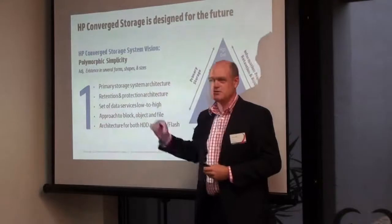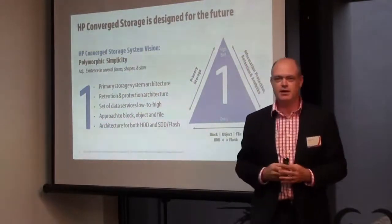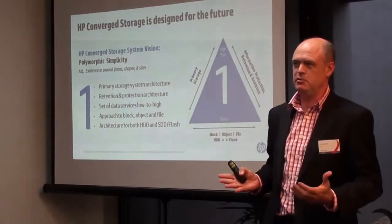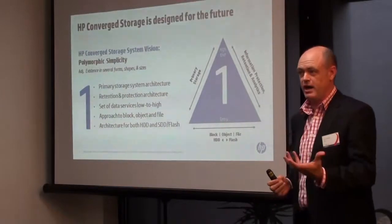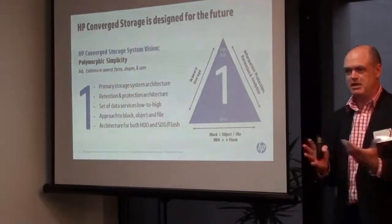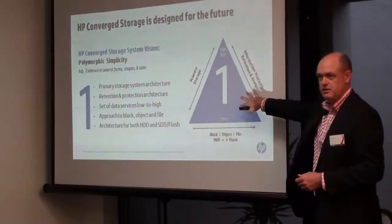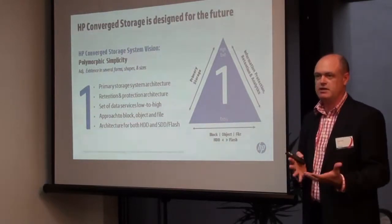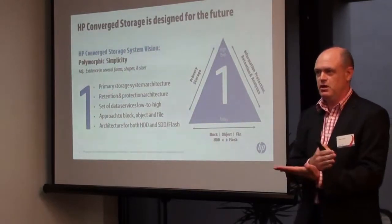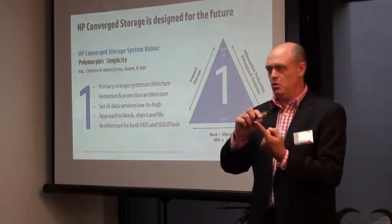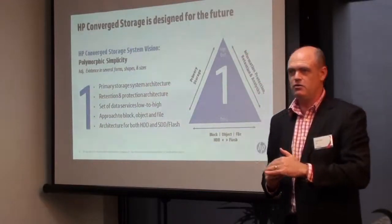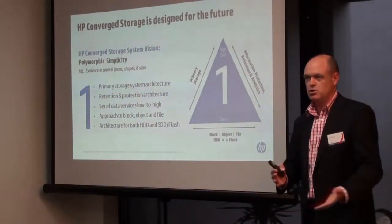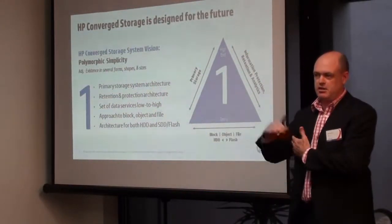Polymorphism, for those of you who've ever been in software development, is an object orientation term. It basically means that you've got one architecture in many different forms to do many different things, but it all is the same. So one storage architecture for all of your connectivity, from high to low, from a couple of terabytes all the way up to petabyte-type scale.